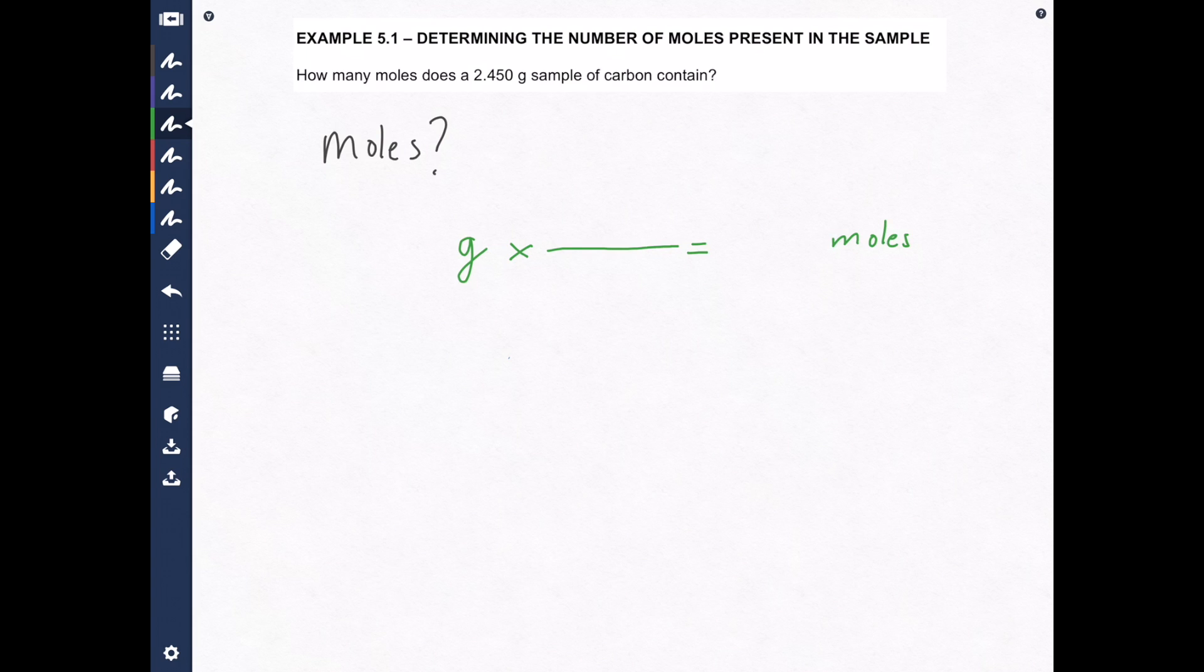Now if you are one of my students in lecture or you've been following along with this video series, you've seen me do this over and over again. The unit that's here repeats down here so that they will cancel. And the unit that goes up here is the unit that we need over here, moles. So if we do this calculation, multiply grams by moles and divide by grams, we'll get the unit moles.